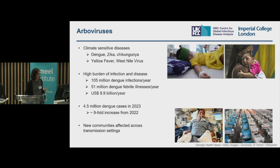Viruses such as chikungunya and West Nile also cause negative impacts in older populations — chronic joint pain as well as negative neurological conditions in elderly populations. And these diseases really have potential for causing surges in hospitalizations at the level of what we experienced in London during the pandemic, except these things happen in lower middle income countries year round.